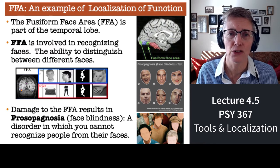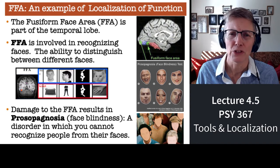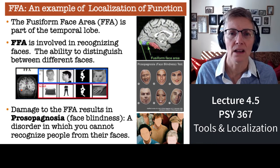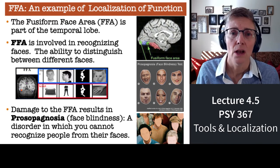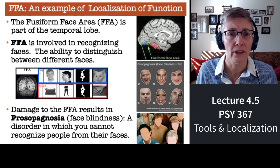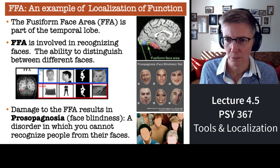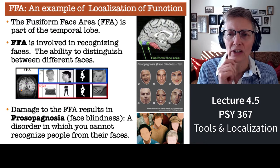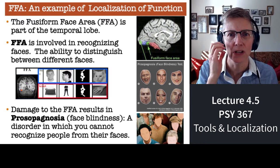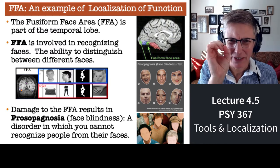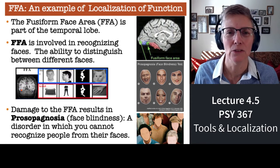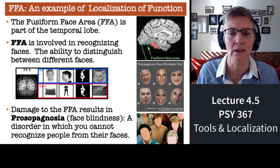Prosopagnosia can come from brain damage, and we think also from genetics or something that happens at birth — we're not entirely sure. People with prosopagnosia recognize others not based on their faces, but based on hairstyle, clothing, the way they walk, their voice, or something else. fMRI has been really instrumental in showing how localized the function in the FFA is — this small chunk of cortex does something critical for us social animals: recognizing one another.